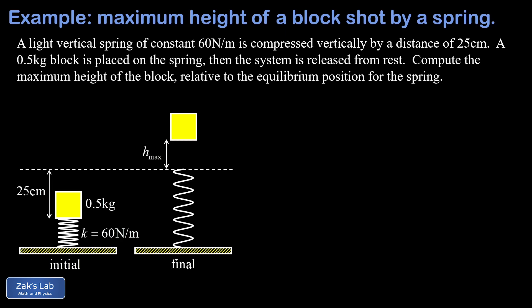So in our initial state we have this spring compressed by 25 centimeters compared to its equilibrium length, it has a constant of 60 newtons per meter, and the block on top of it has a mass of 0.5 kilograms.